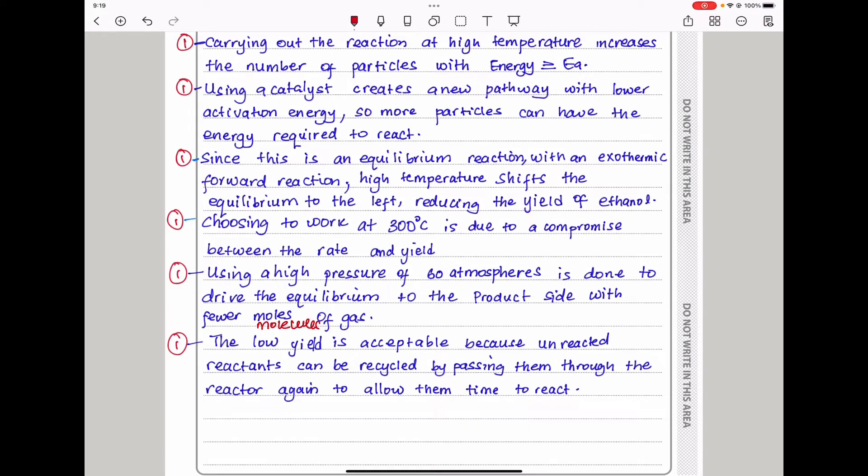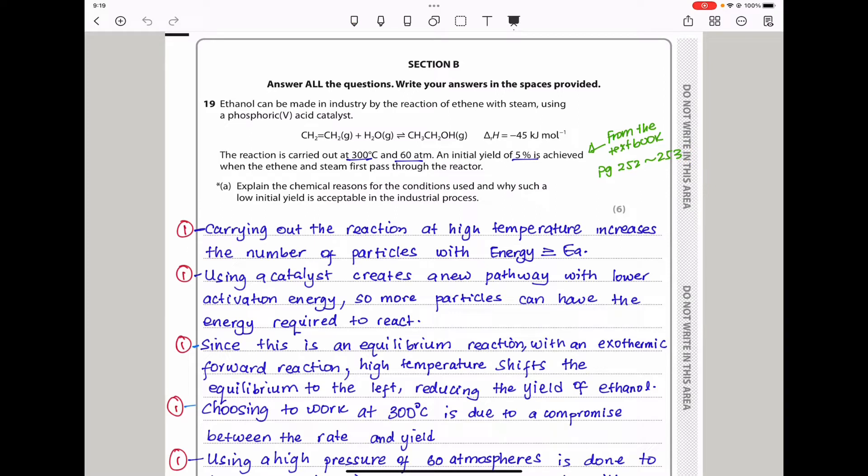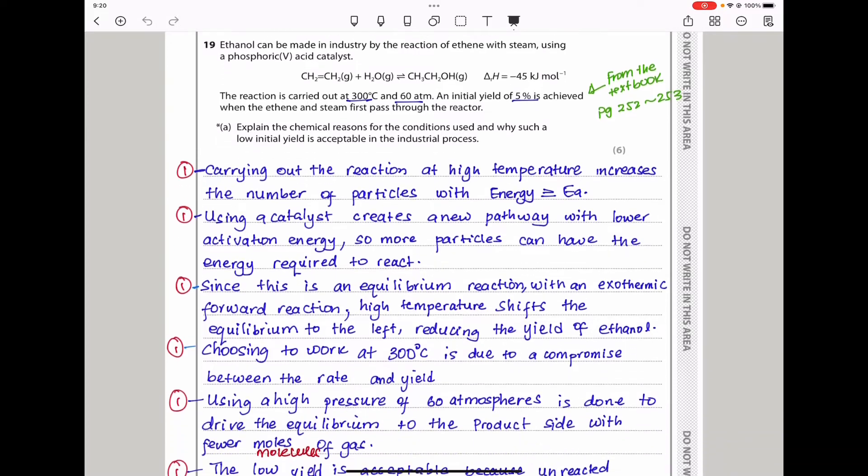The low yield is acceptable because unreacted reactants can be recycled by passing them through the reactor again to allow them time to react. A higher pressure of 60 atmospheres is used because the product side has fewer molecules of gas and a higher pressure causes equilibrium to shift to the product side, increasing the yield of ethanol. Because this is a reversible reaction, the lower yield is acceptable because we can still recycle the unreacted reactants in order to get them to react and produce products.